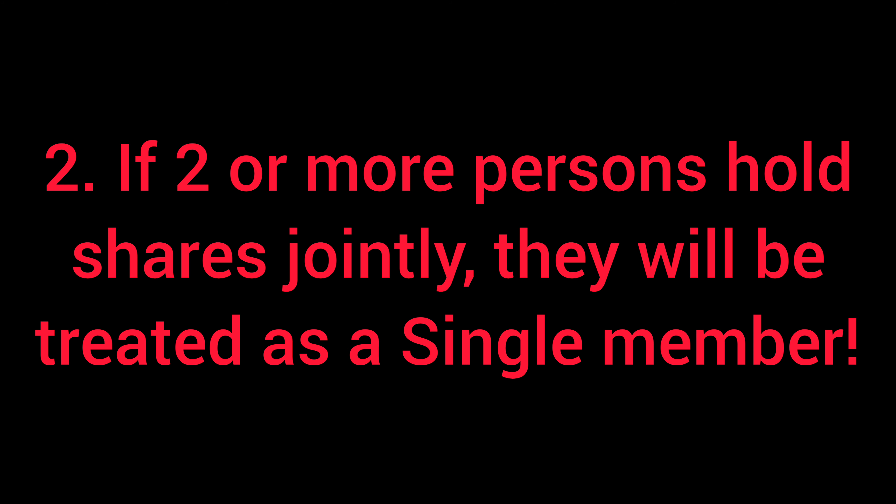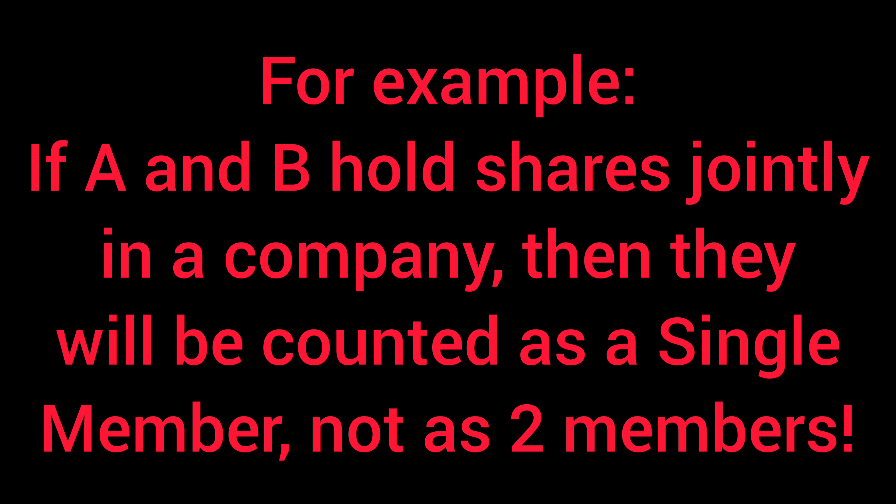The rule is that where shares are held jointly, those members are going to be treated as a single member only. For instance, if A and B both hold shares jointly in a private company, then A and B are going to be considered as jointly holding those shares and therefore counted as a single member for the purposes of counting towards the maximum of 50.